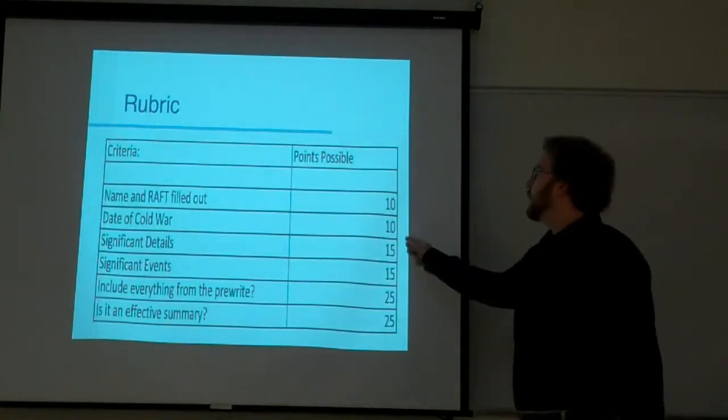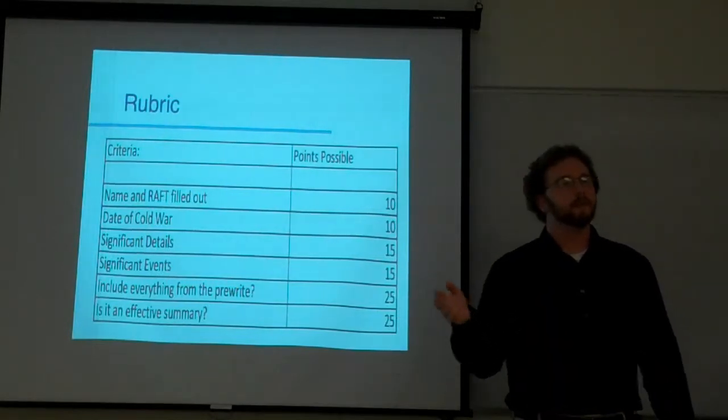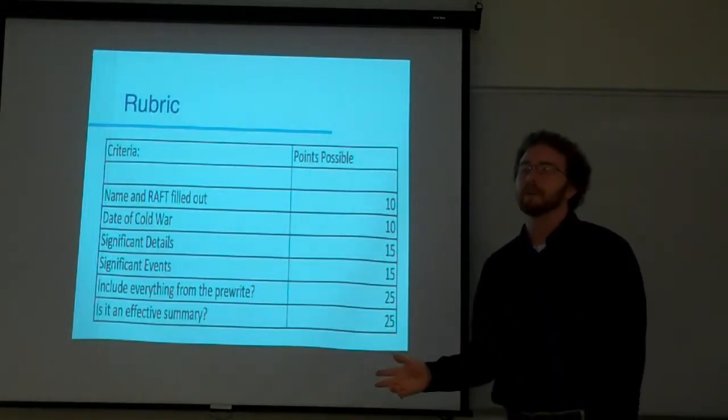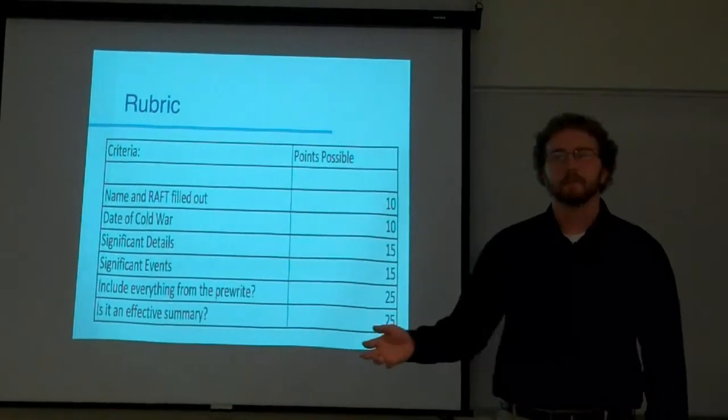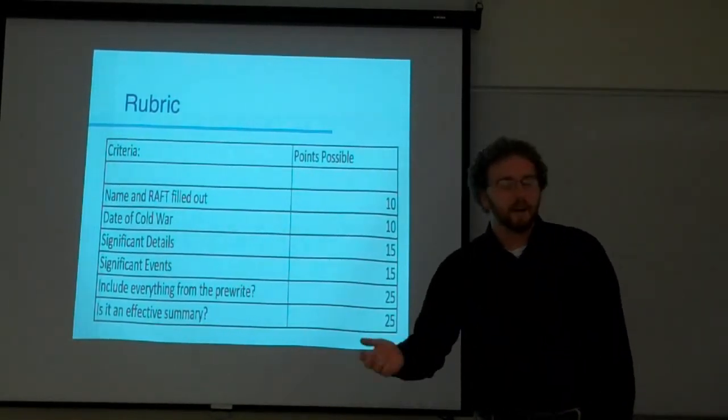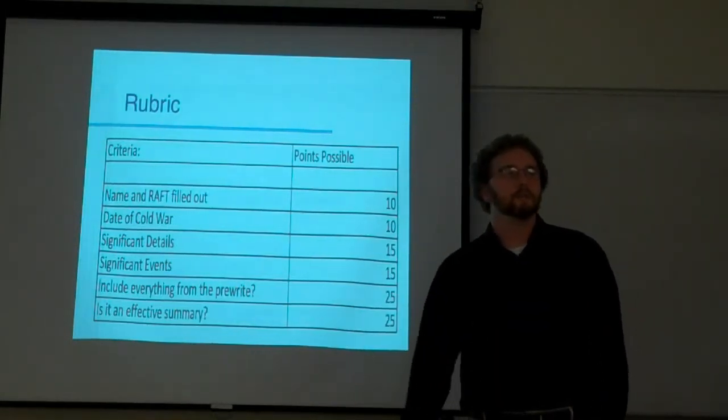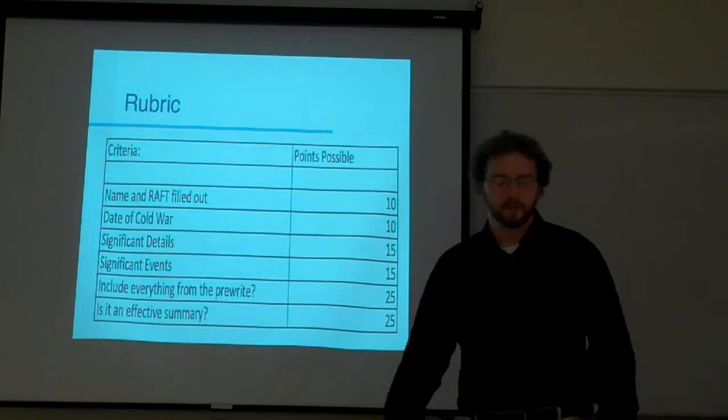The rubric is here. 50 points was just from the pre-write, filling out the RAFT, the date of the Cold War, four significant details, three significant events. 25 points if you include everything from that pre-write in your actual writing. 25 points if I was an outside observer that had no idea what the Cold War was, do I get a good sense of what it was all about?